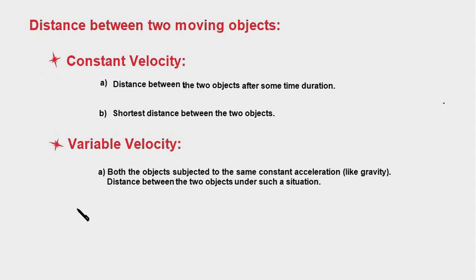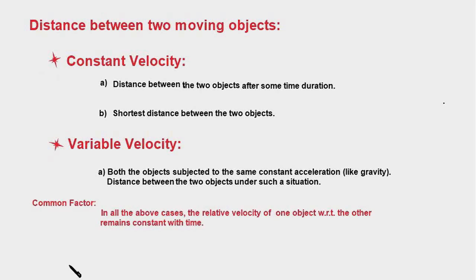The next case involves objects having variable velocity — variable with respect to time — but both objects are subjected to the same constant acceleration. An example could be two projectiles moving under the influence of gravity. For all these cases there is a common factor: in all of them, the relative velocity of one object with respect to the other is constant with time. So let's get started.